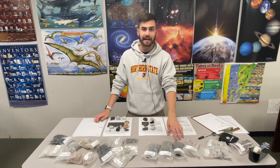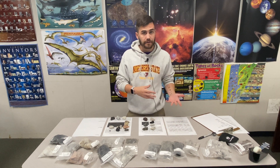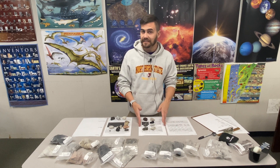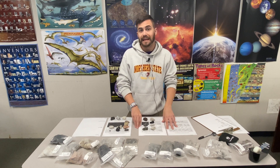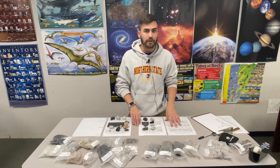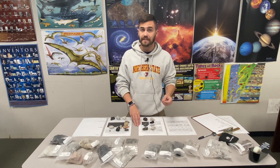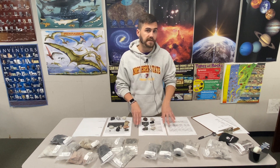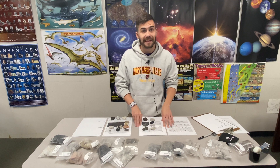First up are the igneous rocks. Igneous rocks are rocks that are made from minerals that crystallize from magma. That's the only way to produce igneous rocks and only igneous rocks can form that way. Igneous rocks form on the surface from lava or deep below the surface from magma, and there are telltale signs which tell us if an igneous rock cooled and formed on the surface or below the surface.